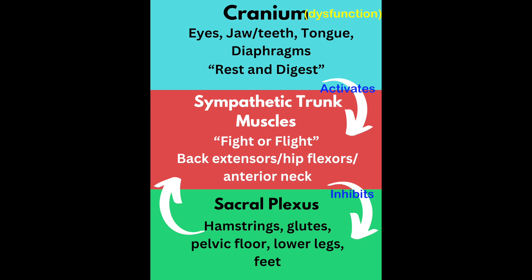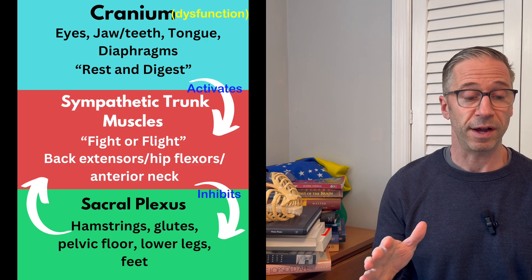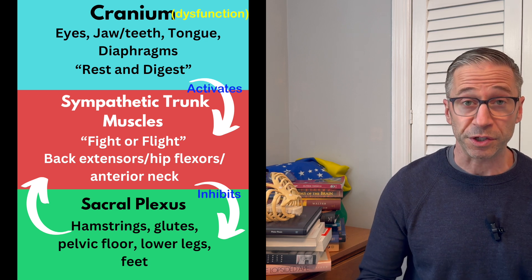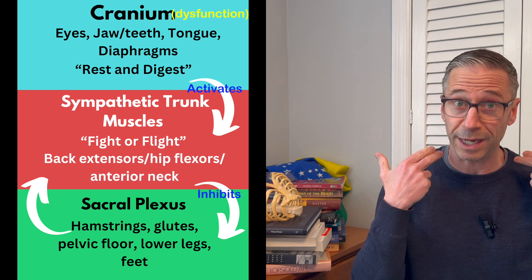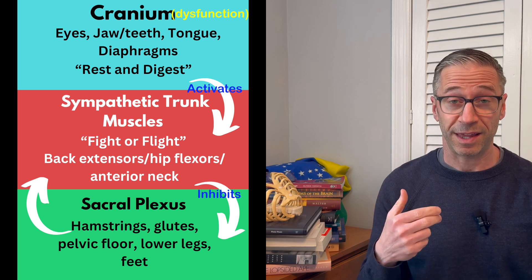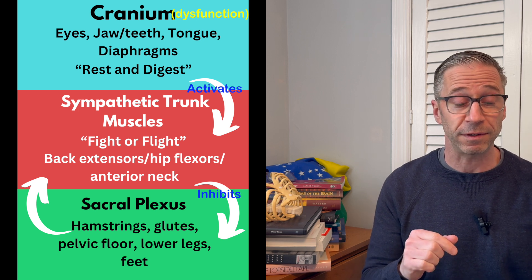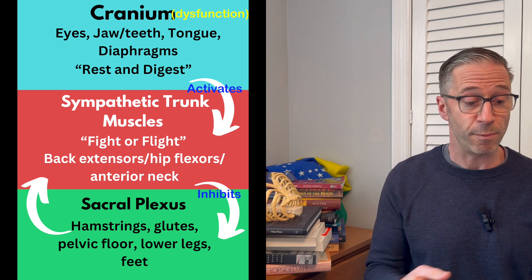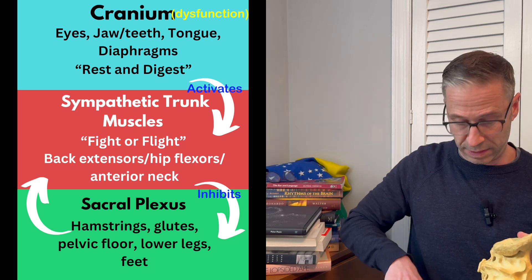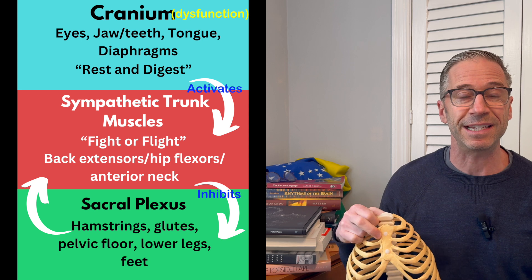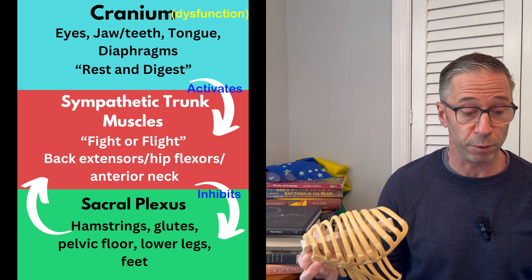Whenever you have cranial dysfunction — which a forward head and neck will lead to — something's going to go wrong with your vision, your jaw, your teeth, your tongue, your diaphragms. You're not going to be in a good rest-and-digest parasympathetic state. If you're in a forward head posture, you're going to neck breathe, and when you neck breathe, you're not going to be diaphragmatically breathing — so you'll have diaphragmatic dysfunction. Your parasympathetic activity will decrease, and as that decreases, your fight-or-flight sympathetic trunk muscles, back extensors, hip flexors, and the front of your neck will activate and increase. As they stay active in this extension position, it inhibits your use of hamstrings, glutes, pelvic floor, lower legs, and feet.